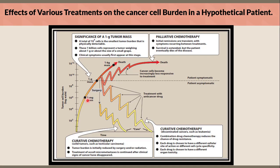Clinical symptoms usually first appear at this stage. If the disease progresses to reach 1 kg mass of tumor, the patient will die. At this stage, there are two pivotal pathways: the curative way and palliative chemotherapy.